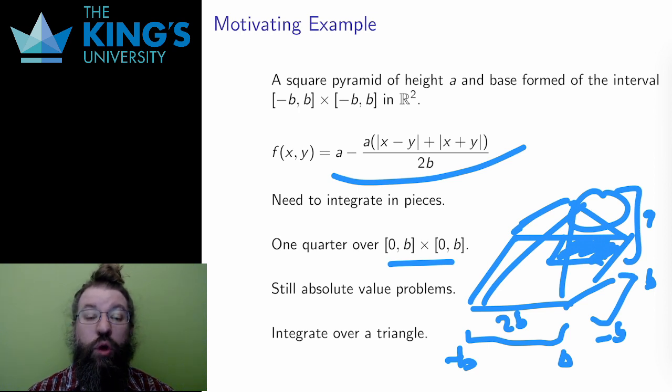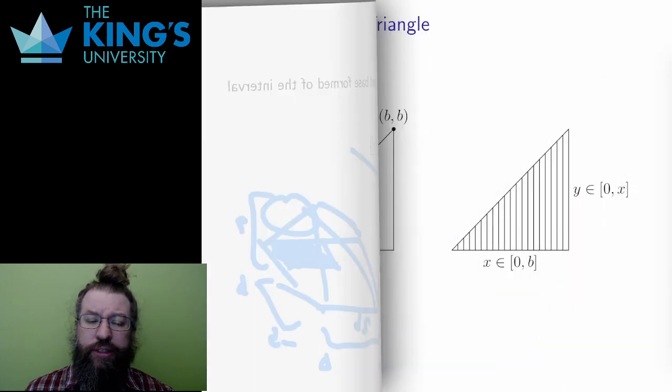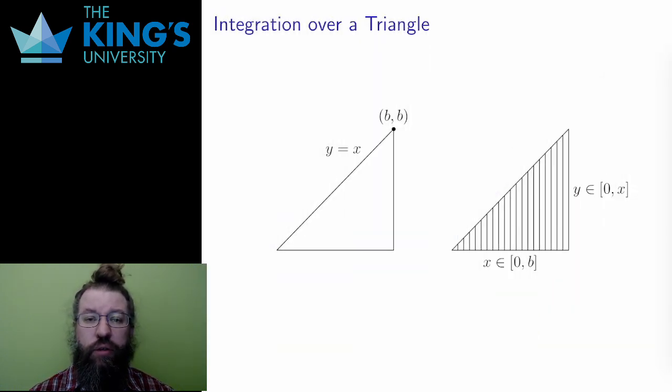One half of this interval, one eighth of the total pyramid. So how do I integrate over a triangle? This will be the first non-interval integral I do, but it will set the pattern for all the rest. The trick is to allow variable bounds.